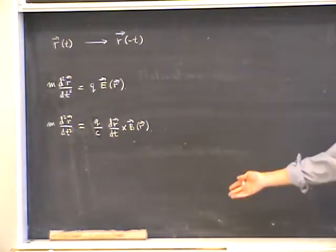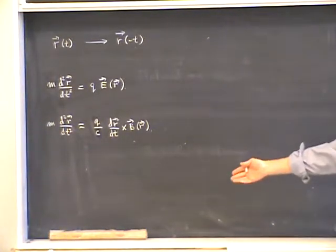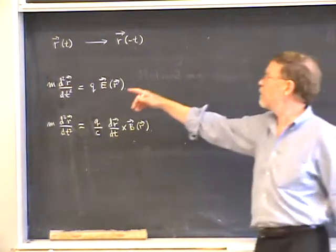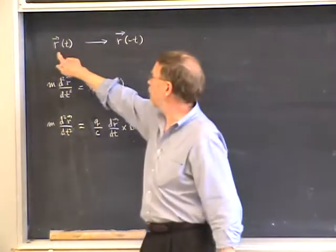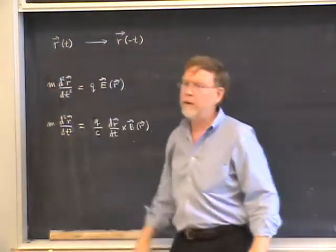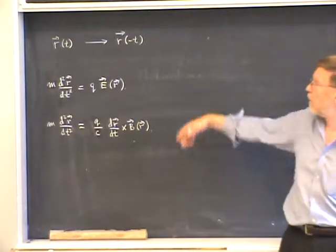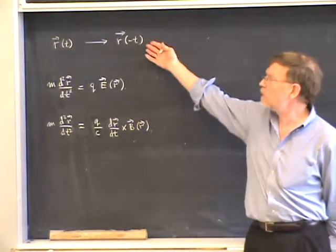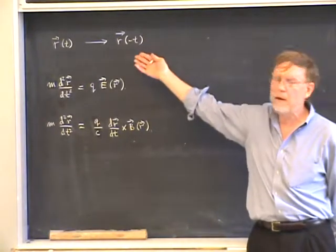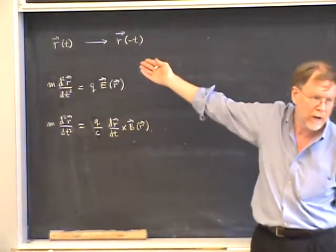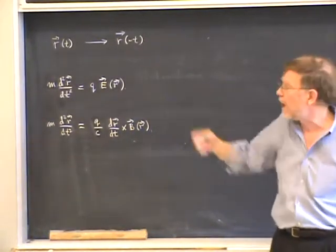Last time I was explaining time reversal in classical mechanics. We take a trajectory of a particle in three-dimensional space and reverse time. That can be considered the trajectory you get in a movie run backwards.